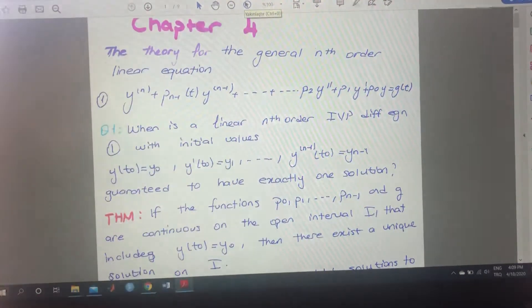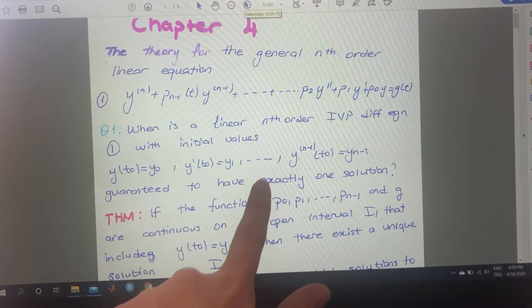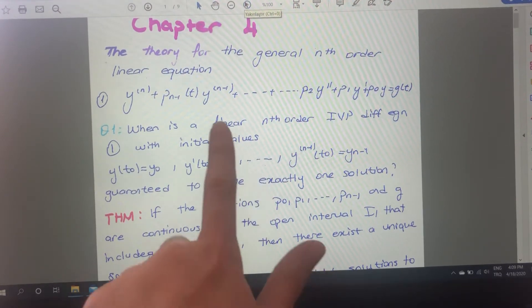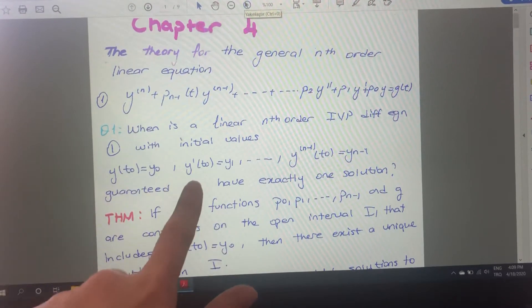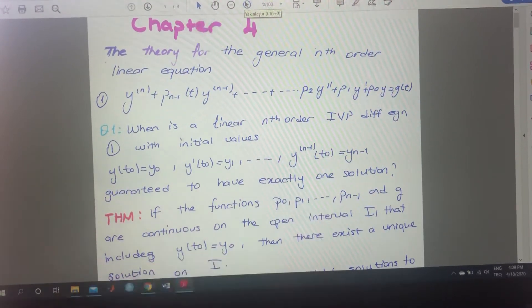So this is the general nth order differential equation, and we will start how we can make sure that this has a unique solution. This is what we are saying in question 1: How can we guarantee that this nth order differential equation have exactly one solution?